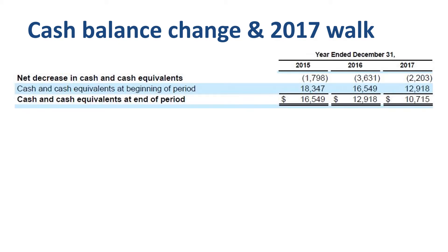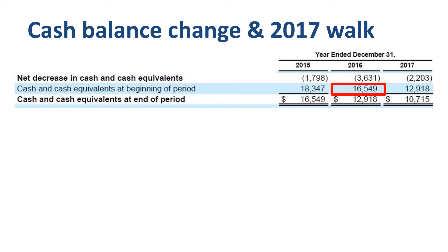Cash balance change and 2017 cash walk. The balance of cash and cash equivalents was $18.3 billion at the start of 2015, going down to $16.5 billion at the end of 2015. Ending balance of 2015 is the same as the opening balance of 2016. Cash went down by $3.6 billion in 2016 to $12.9 billion at year-end. In 2017, the cash balance went down a further $2.2 billion to $10.7 billion at the end of 2017.